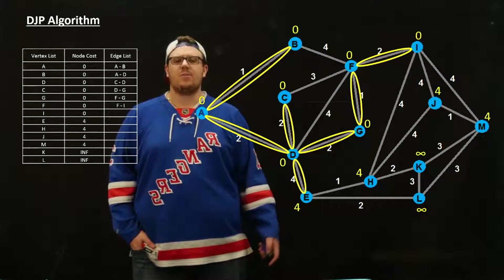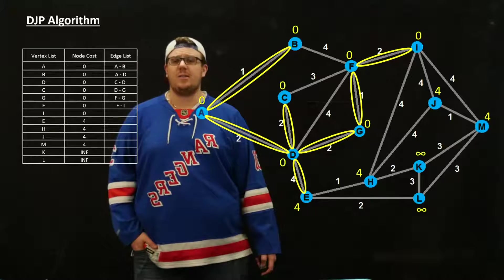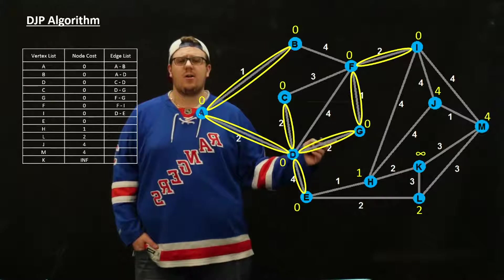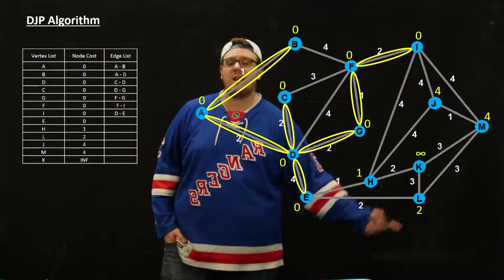We're going to add E. We're going to make E zero and update all adjacent nodes with the new distances away. E gets a zero, H now is a 1, L is now a possibility, and it has a weight of 2.